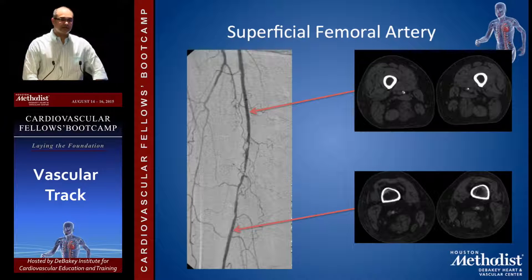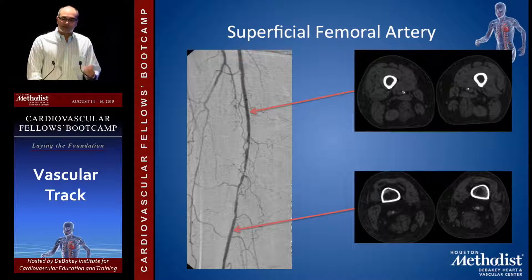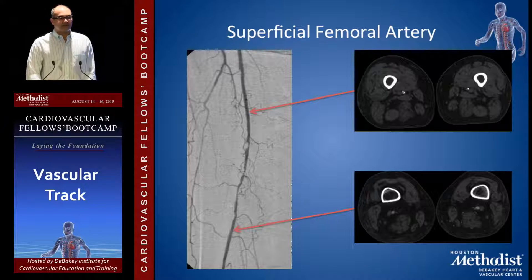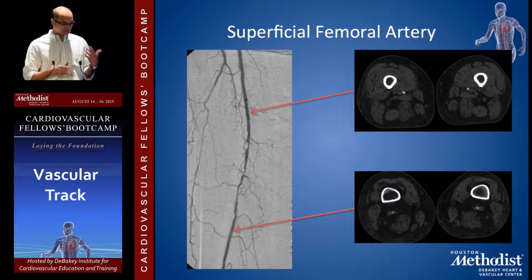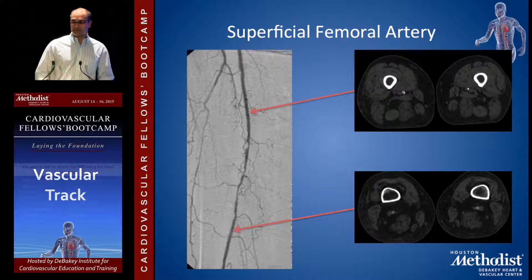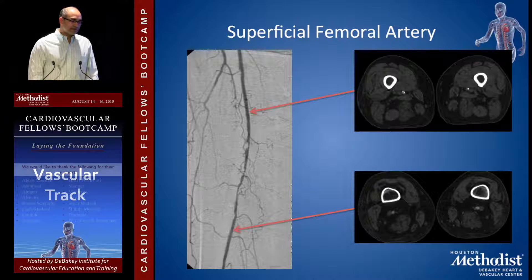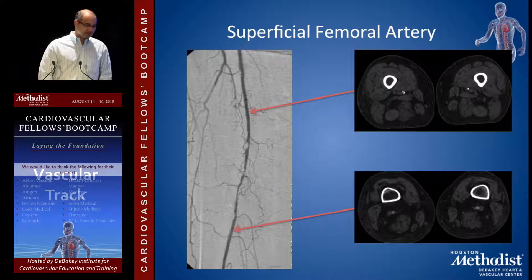The SFA is a very unique artery — you see a lot of disease there. When people walk and run, the SFA not only moves up and down and side to side, but also has a rotational movement. Muscles move it so much, creating shear stress that makes the intima and media more predisposed to atherosclerosis. The SFA starts anteromedial and then becomes posterior to the femur as it approaches the adductor hiatus and then behind the knee — so your incision depends on where you want to expose it.